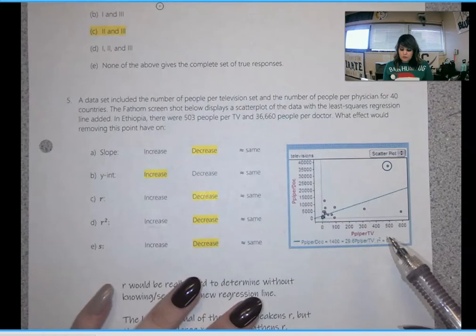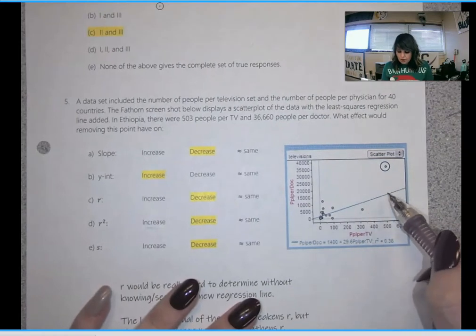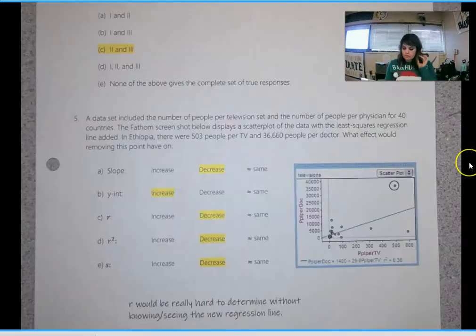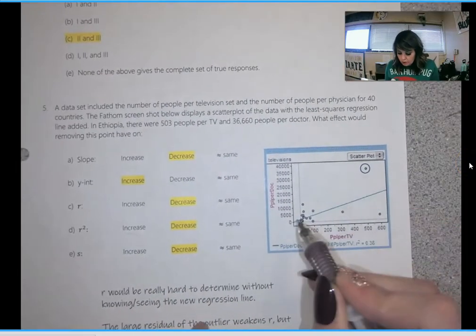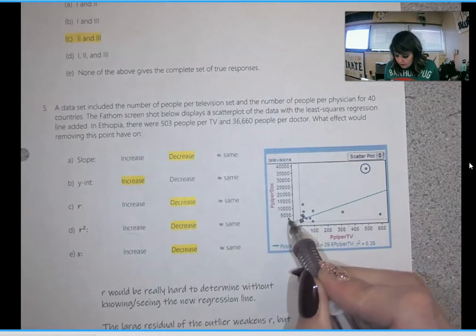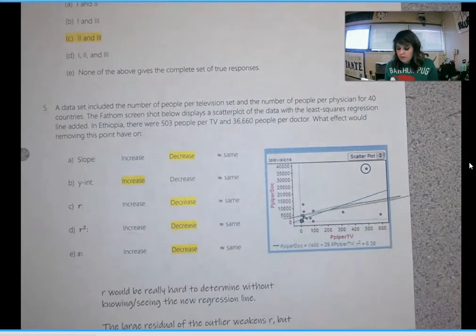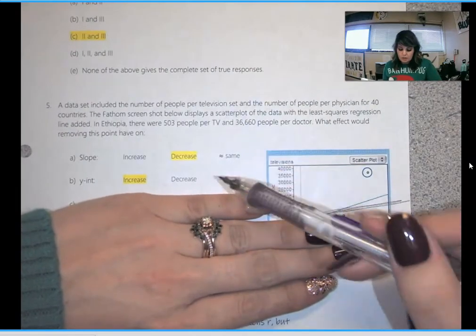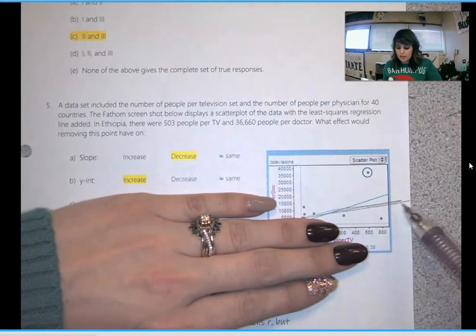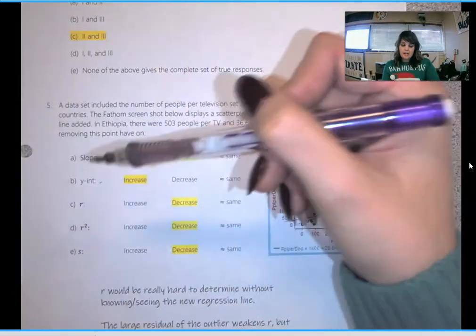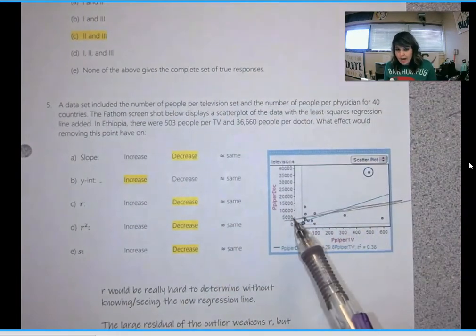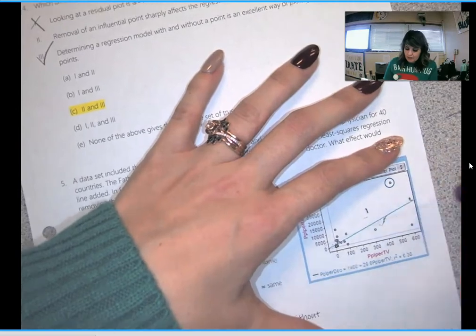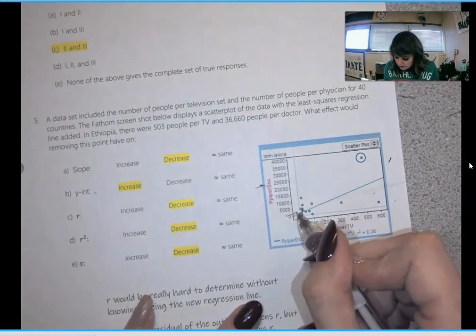So what effect would removing this point have on the variables? For slope, in my mind, if we remove this point, our line is going to become flatter. So I felt really good about slope and y-intercept. I felt confident that slope would decrease because the line is flatter. And I felt pretty confident that y-intercept would increase because when that line flattened out, that would cause it to go up on the y-axis. I really shouldn't draw my lines like that because it makes it a little bit harder to see. So I thought the line was going to do something like that.